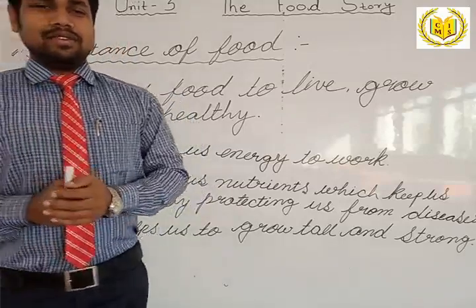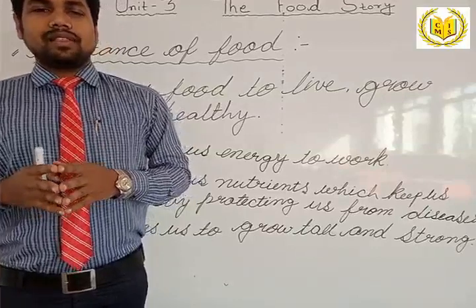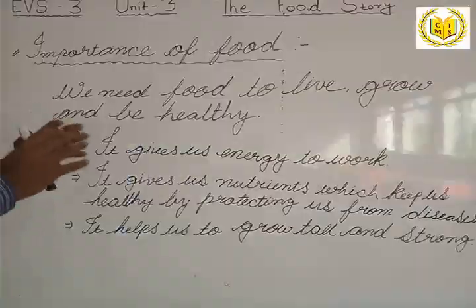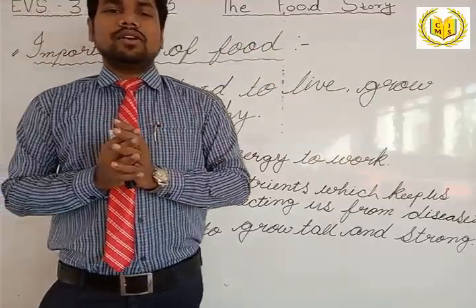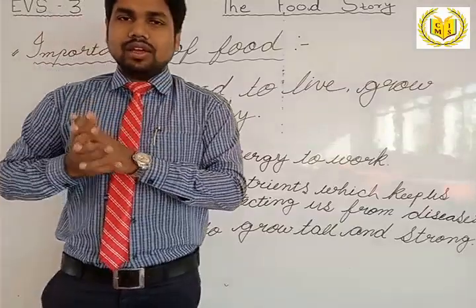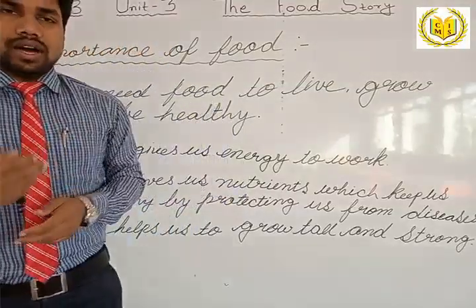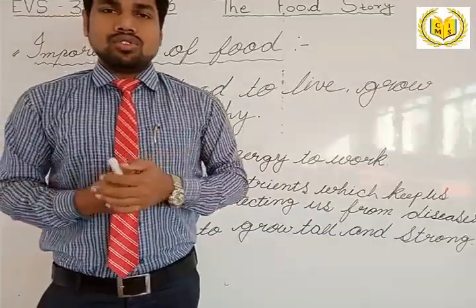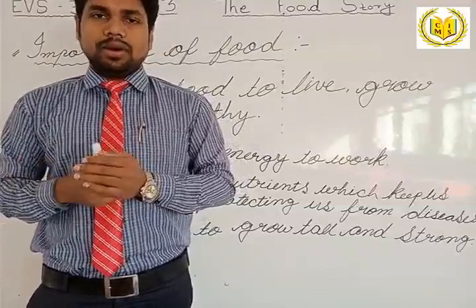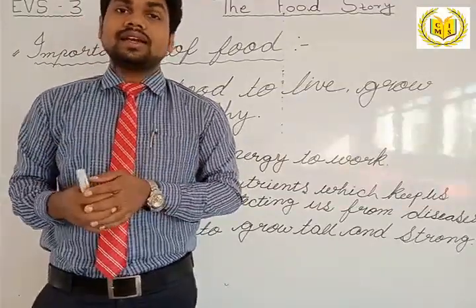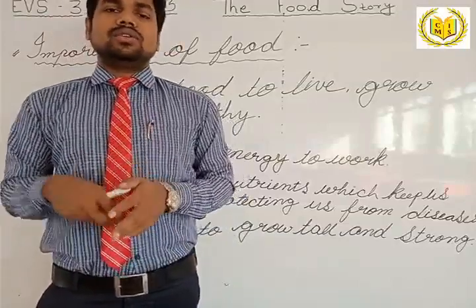We have studied EVS from our basic needs. First we learned about clothes, then about our body parts. And now we will learn about the food story — specially the food we eat. In this chapter we will discuss several things about food: why food is important, why we eat food, what are the sources of food, different types of sources, how we eat food — some raw, some cooked — and different utensils used for cooking.